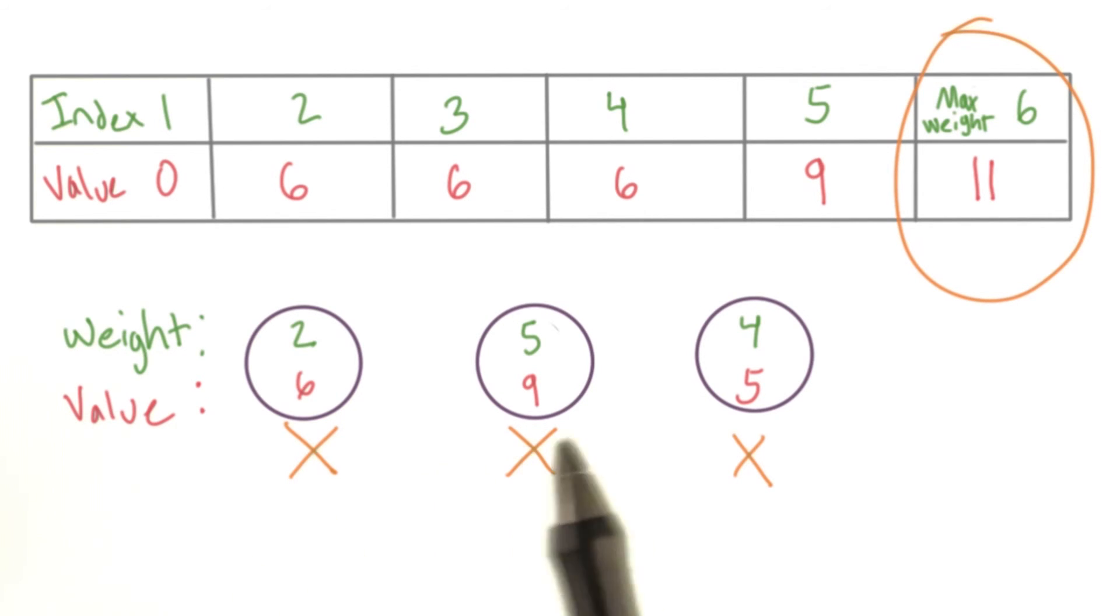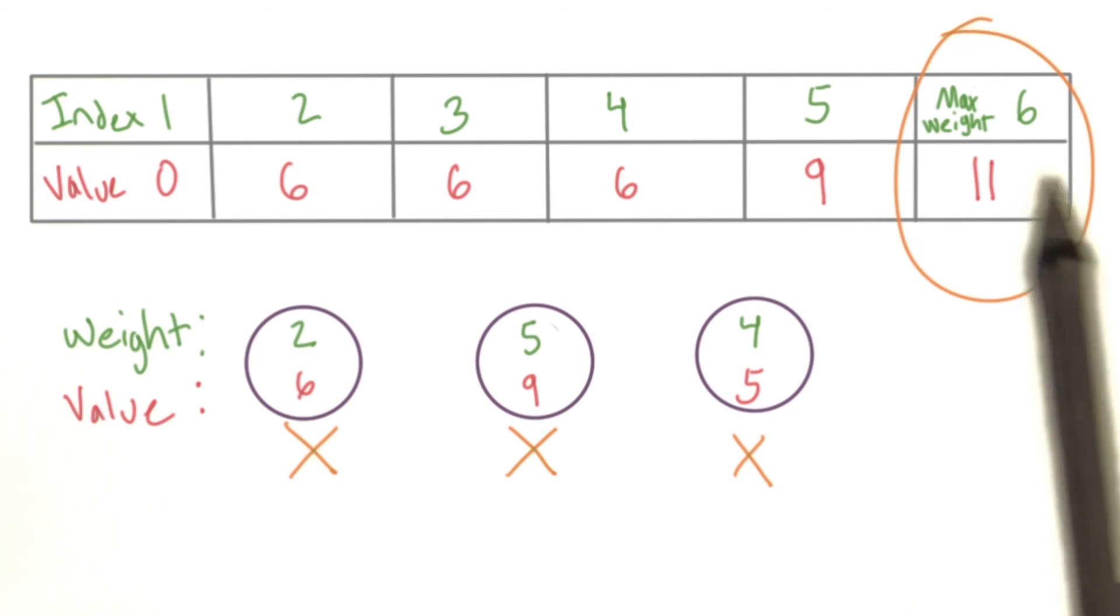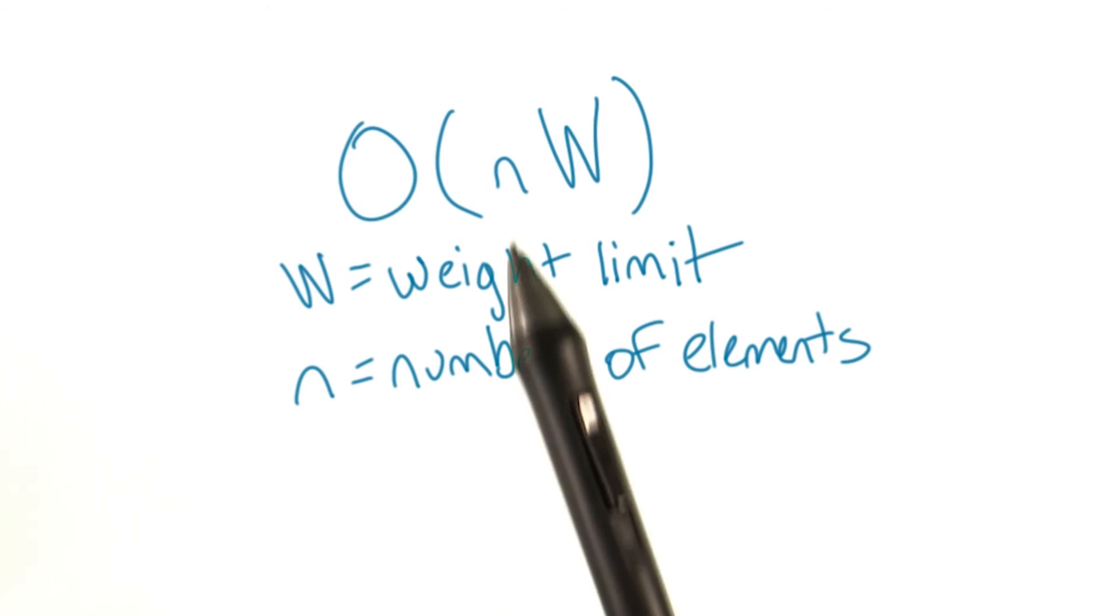We go through every object and check if it can increase the maximum value of every possible weight up to our maximum weight. Thus, the runtime is n times w, where w is the weight limit of our knapsack, and n is the number of elements.